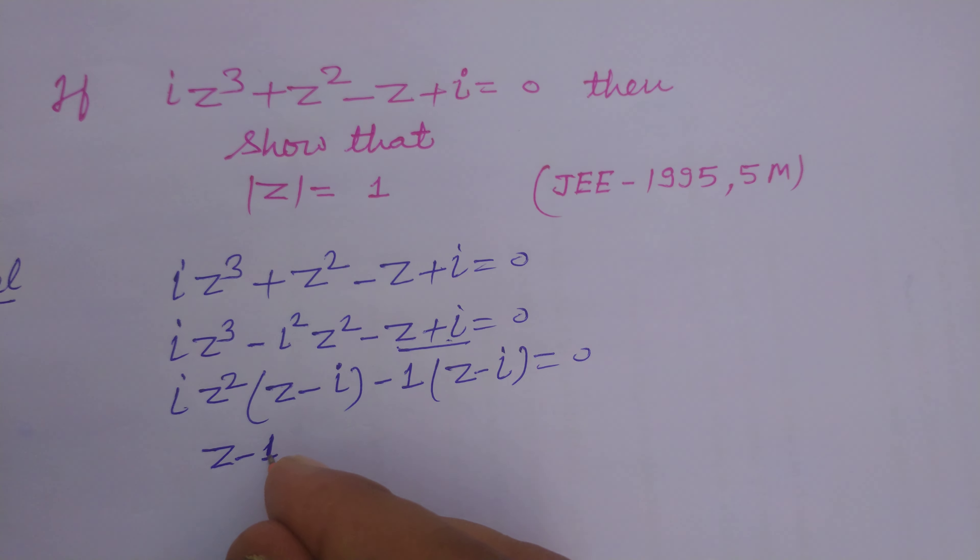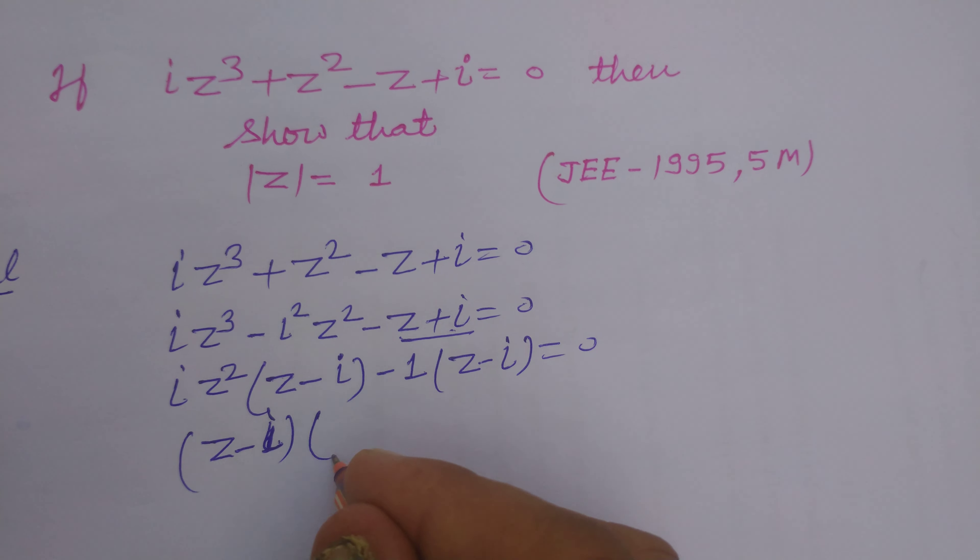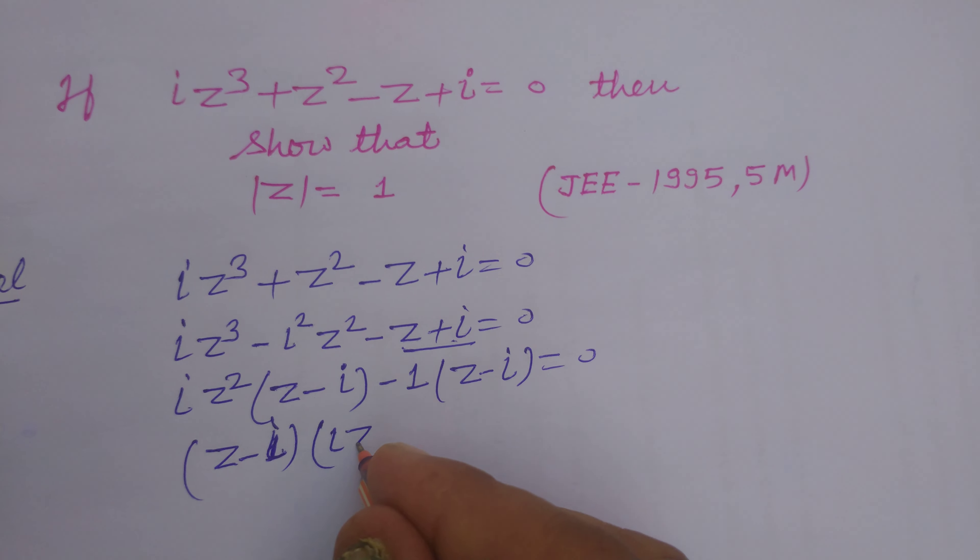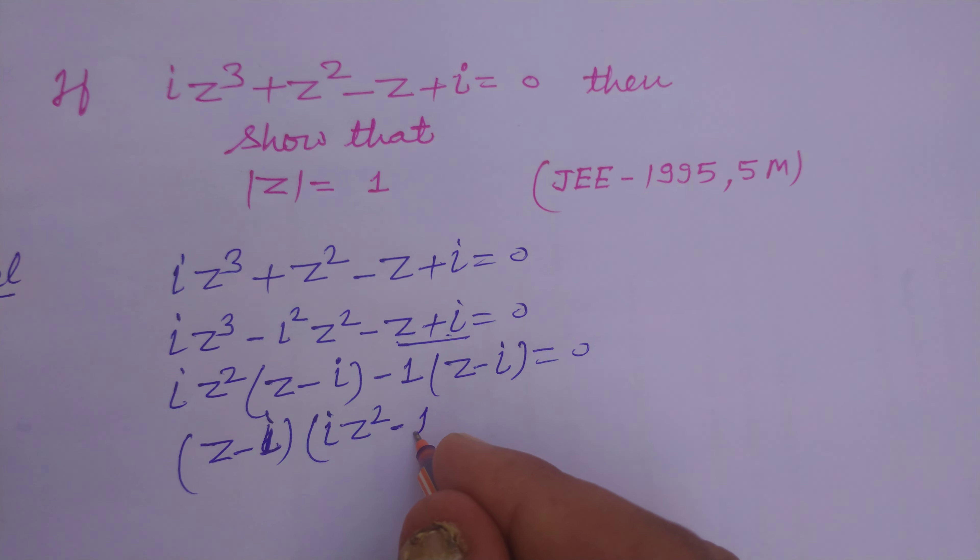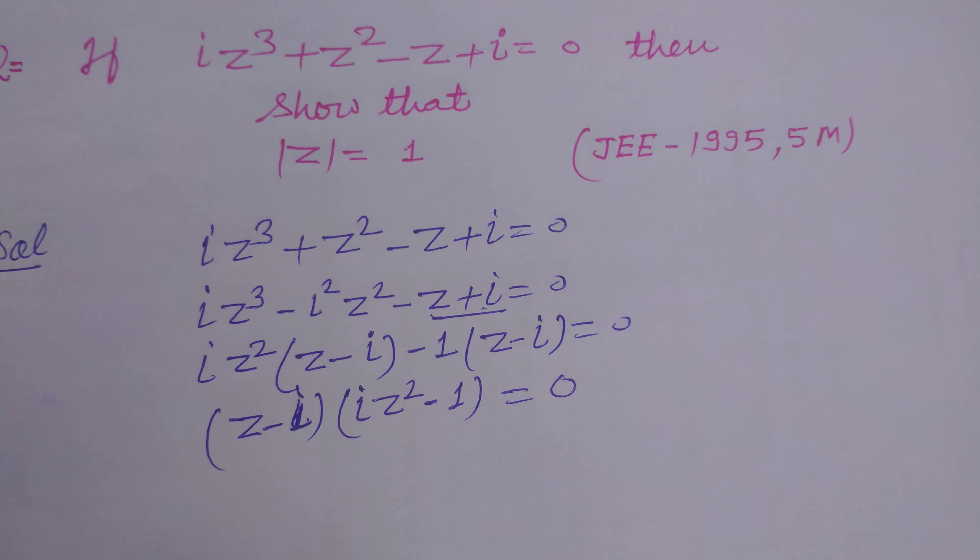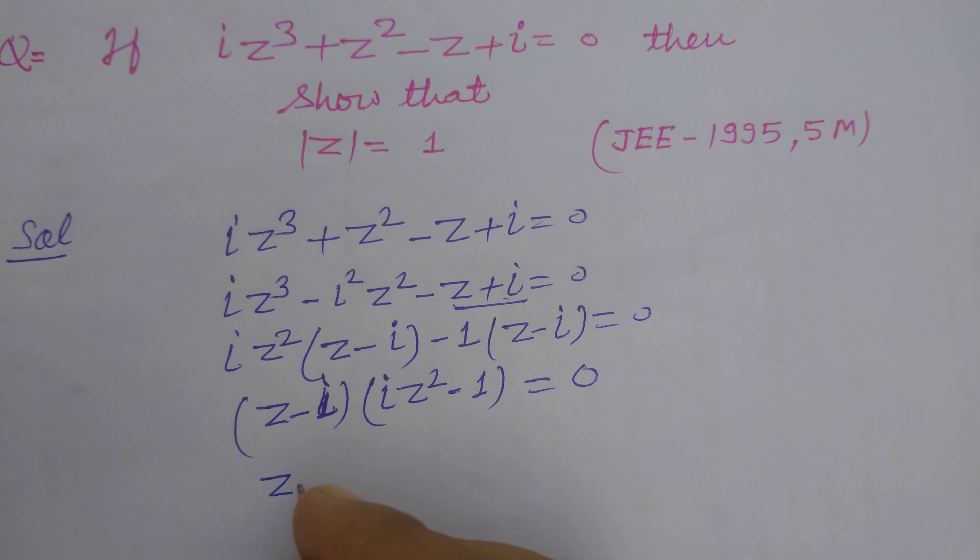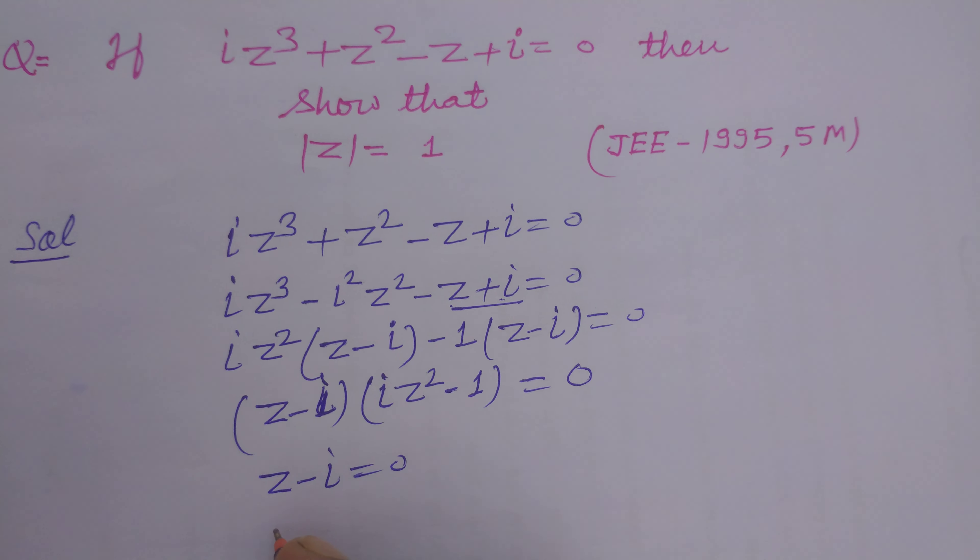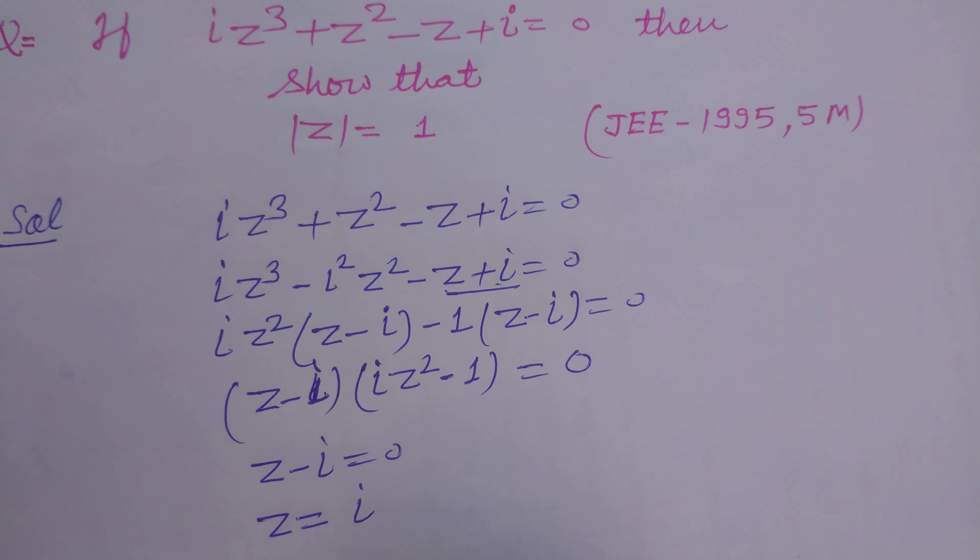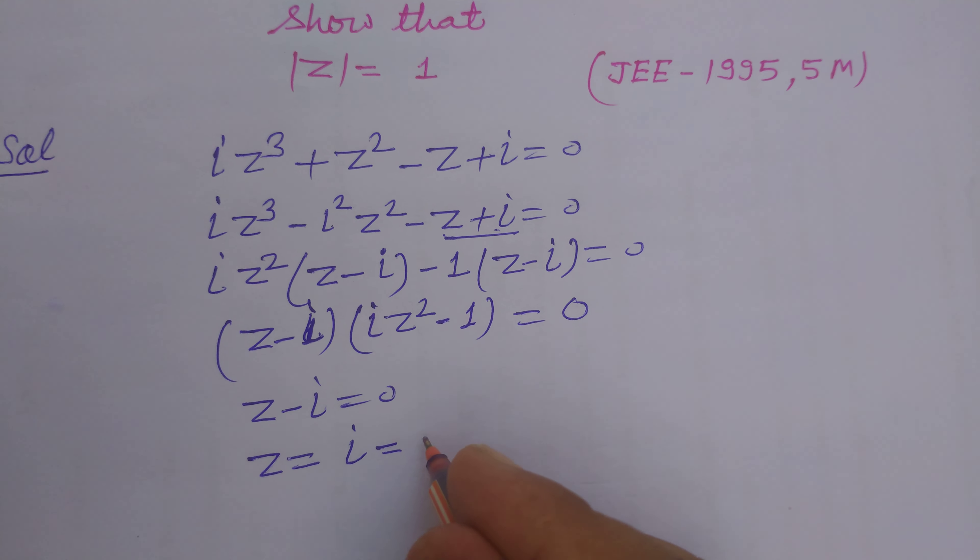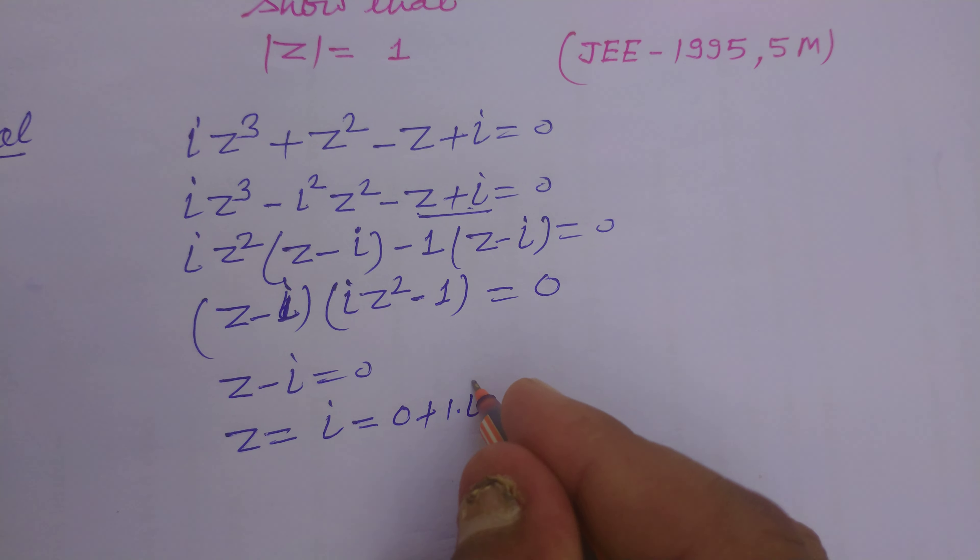So z minus iota times iota z squared minus 1 equals 0 are two factors of this. So first we put z minus iota equals 0. It means z equals iota or we can write it as 0 plus 1 iota.